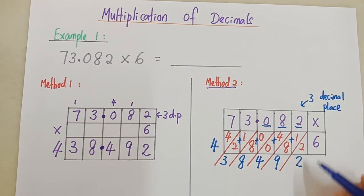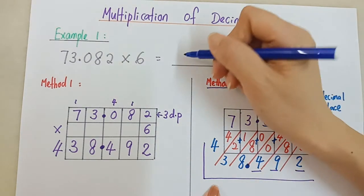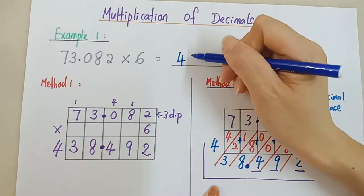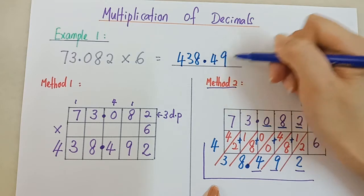So jawapan pun mesti sama. 3 decimal place. 3 tempat perpuluhan. Kira dari hujung. 1, 2, 3. 3 digit dari hujung. So point dia ada di sini. So jawapannya masa awak baca, mesti ambil L shape. So jawapannya 438.492.